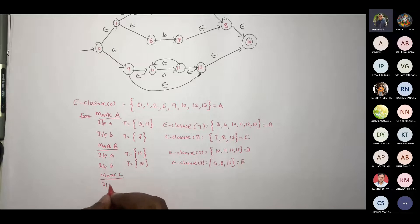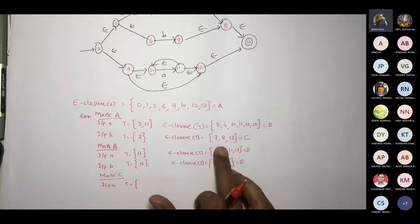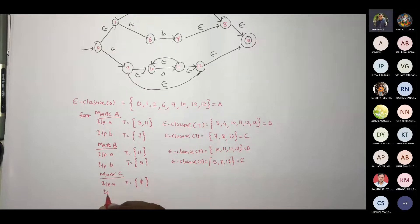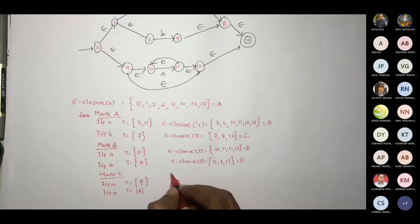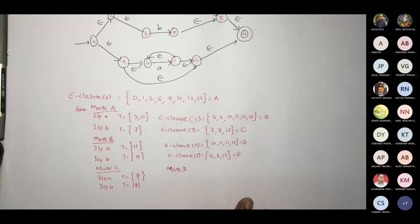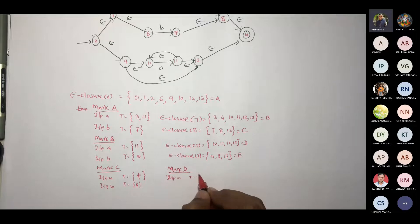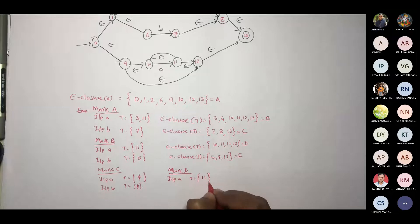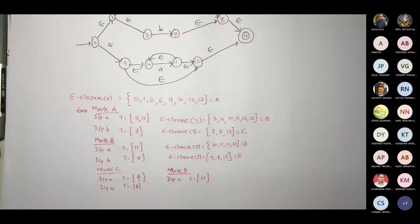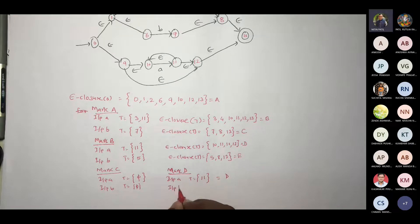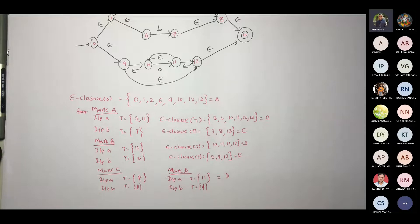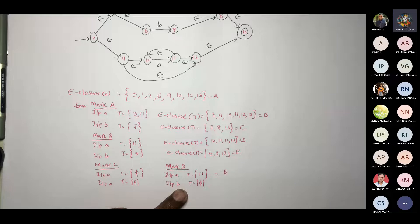Mark C. D: input A, T gives 7, 8, 13 — so this is state E. Correct. Input B would also be 5. Mark D. D: input A, D is {10, 11, 12, 13}, so this would be 11. Already we computed it — this would be D. Input B is 13. Correct.